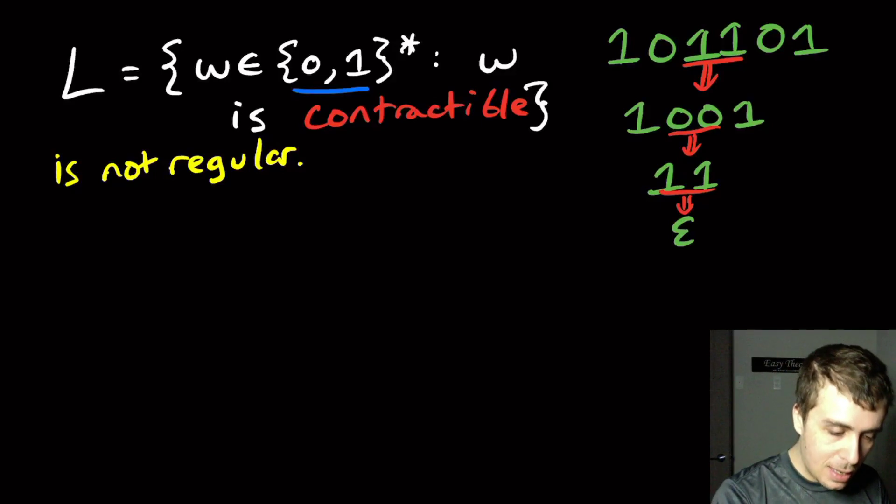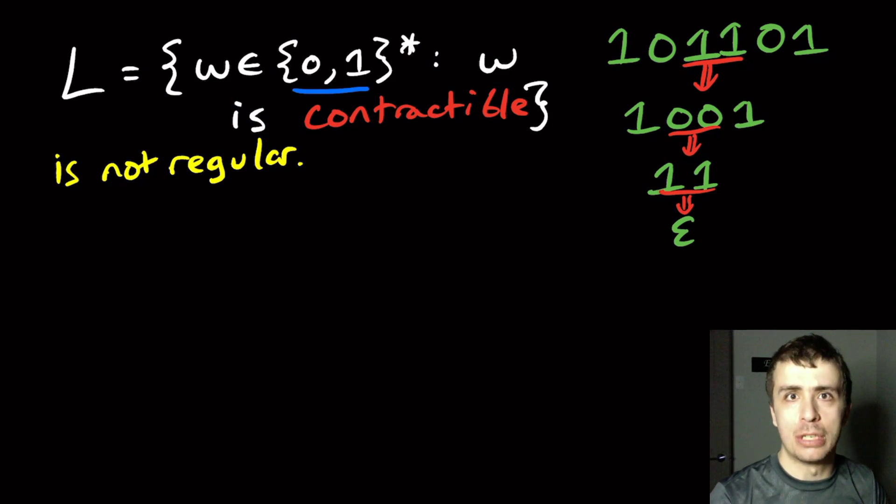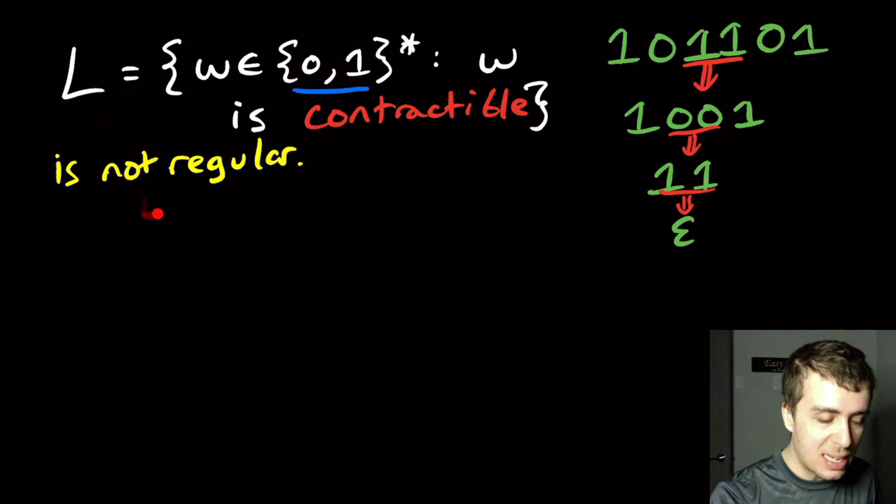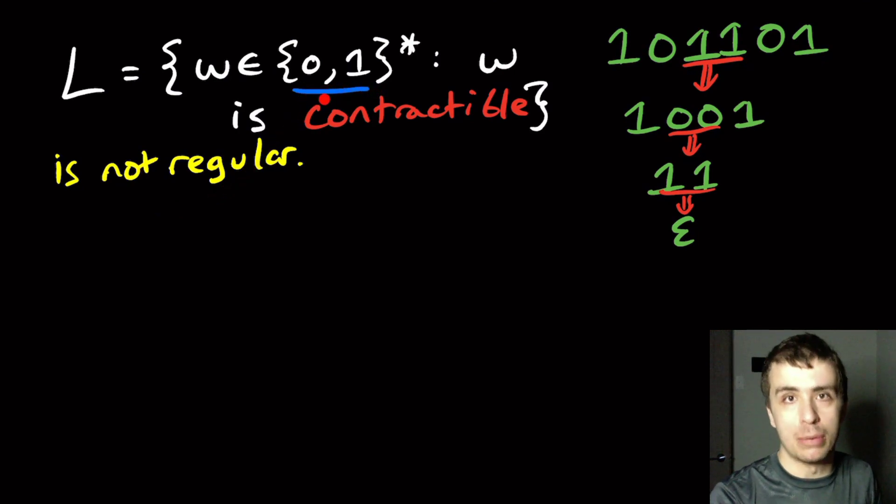Hi, so on the main channel I proved that the set of contractible strings was not regular, and we heavily used the fact that the alphabet had three different characters in it. I want to show that it's not regular even when there are two characters. If it's one character then it is regular, and that's pretty easy to see, but with two characters it's not regular.